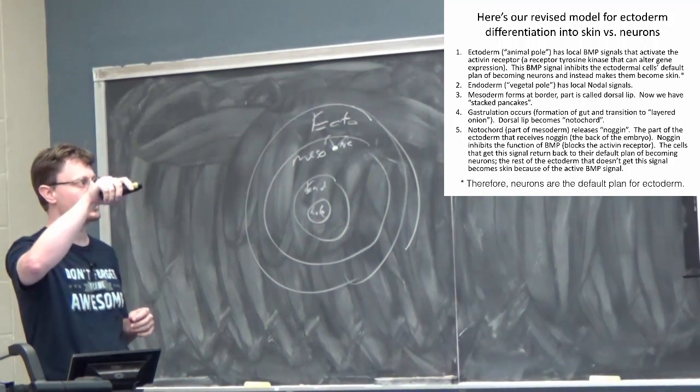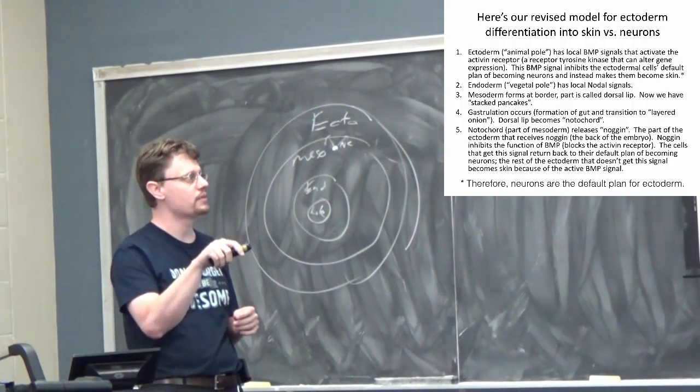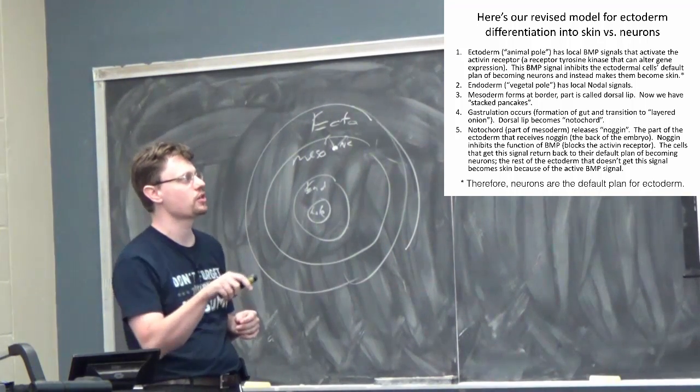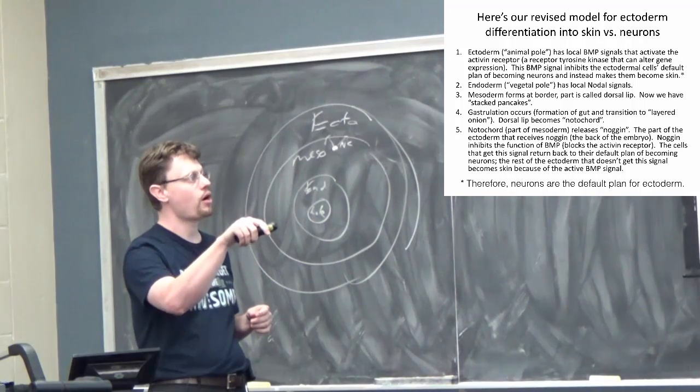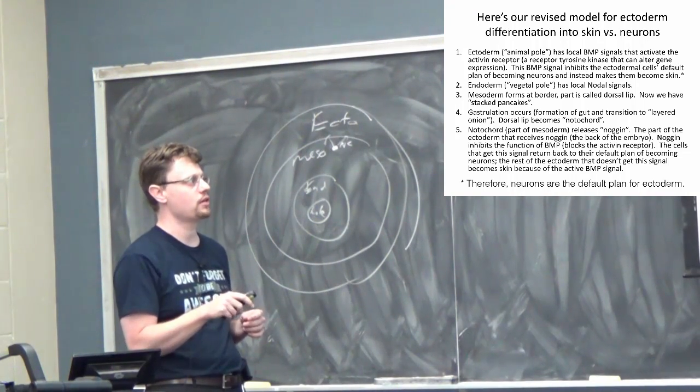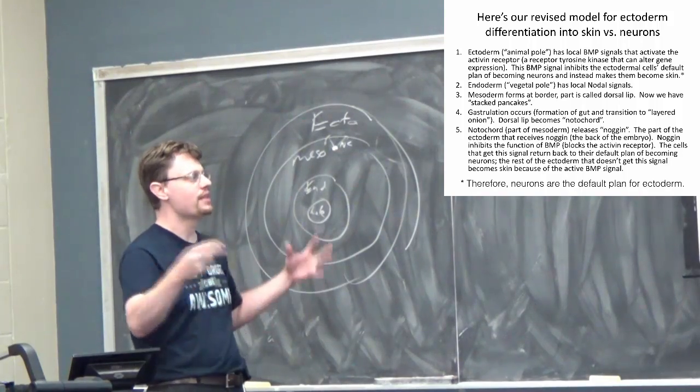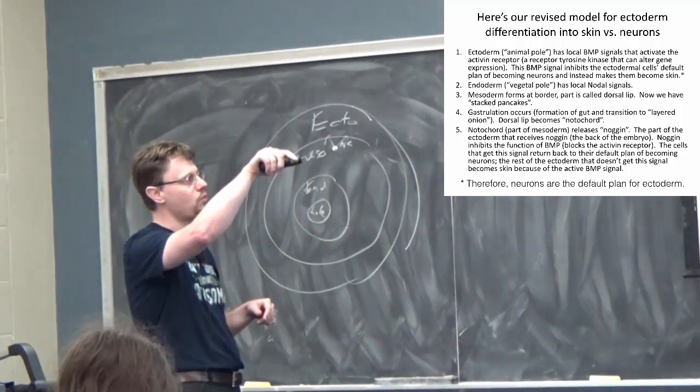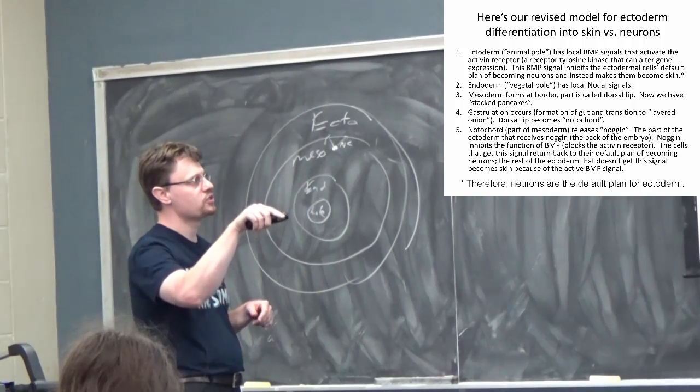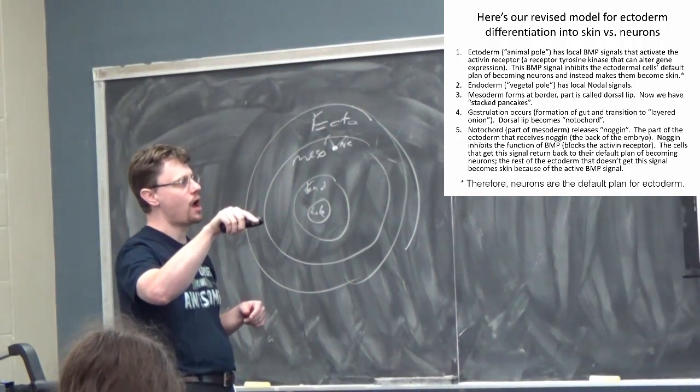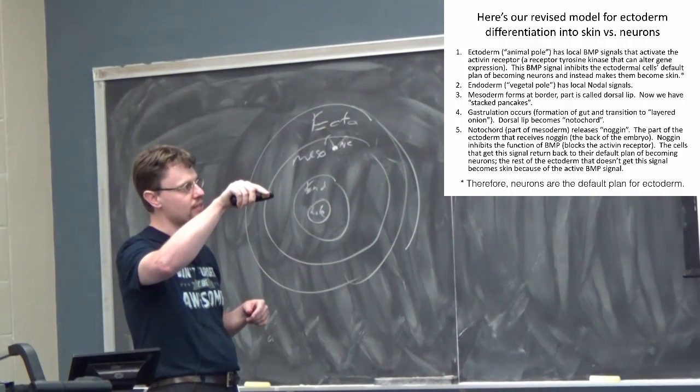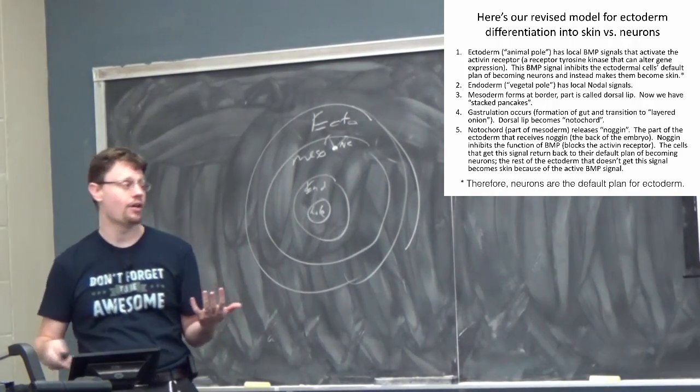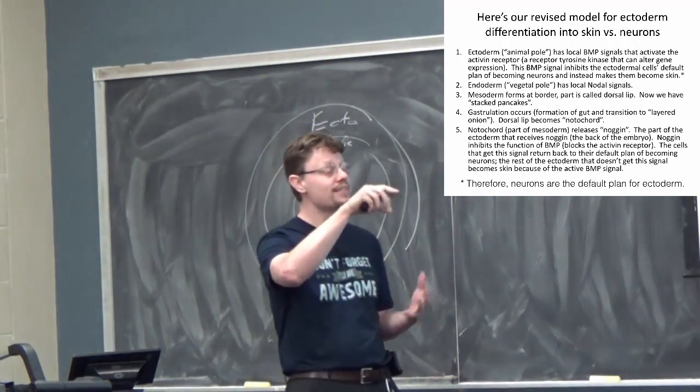Endoderm, there's a lot of excitement going on there, but it gets complicated and we're going to skip over it. But there's this local nodal signal. Again, at the border, you get both signals. These outcast cells, the mesoderm that forms at the border, part of the mesoderm sub-differentiates into something called the dorsal lip. Now we're in stacked pancake phase. Then we've got gastrulation, the sucking in, forming the beginning of the digestive system. And what used to be the dorsal lip now becomes the notochord. And this notochord releases the signal noggin.